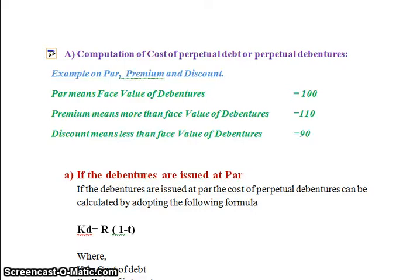Hello everyone. In this class we will discuss the computation of cost of perpetual debt or perpetual debentures. Before starting with the problems, let us understand the concepts of par, premium, and discount with the help of an example. Par means face value of the debenture — assume the face value is 100 rupees, so this 100 rupees we call par.